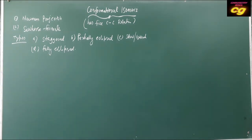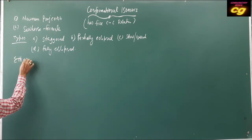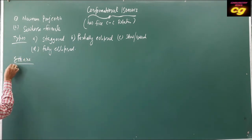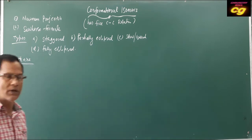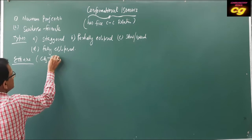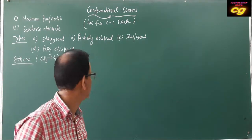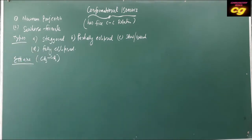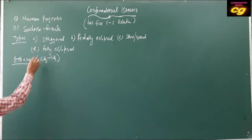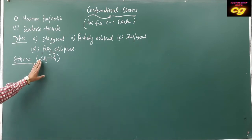Let's discuss one example, that is ethane. Ethane's general formula is CH3-CH3. If you express this structure in Newman projection formula, let the first carbon be the front carbon and the second carbon be the back carbon. The back carbon is generally represented as a circle.